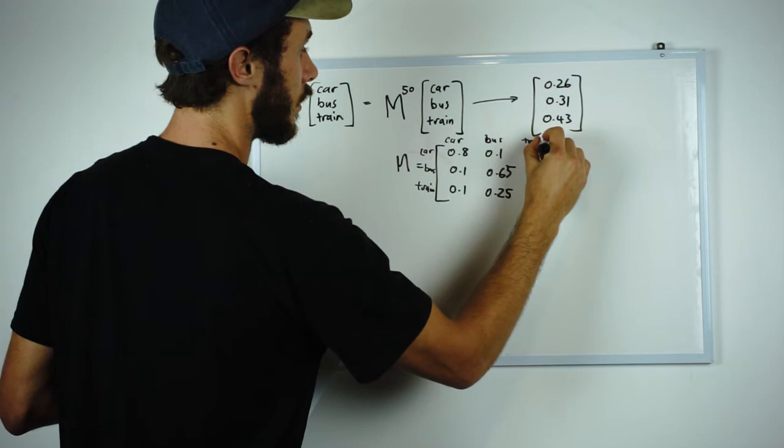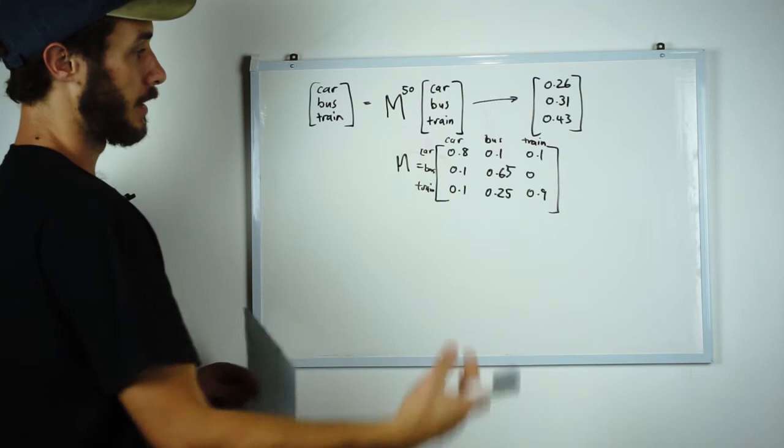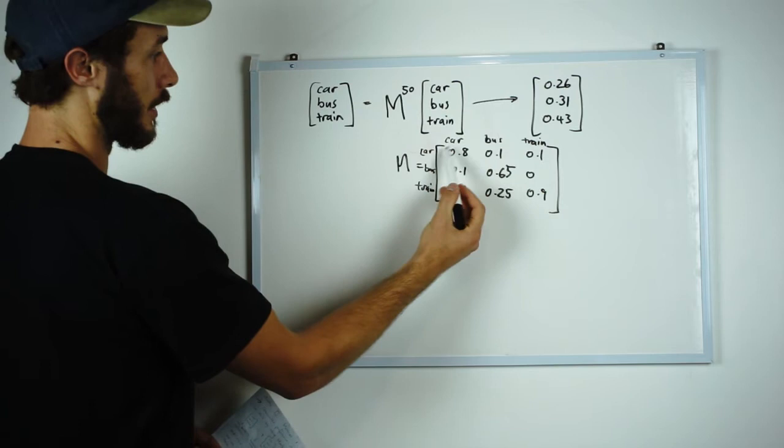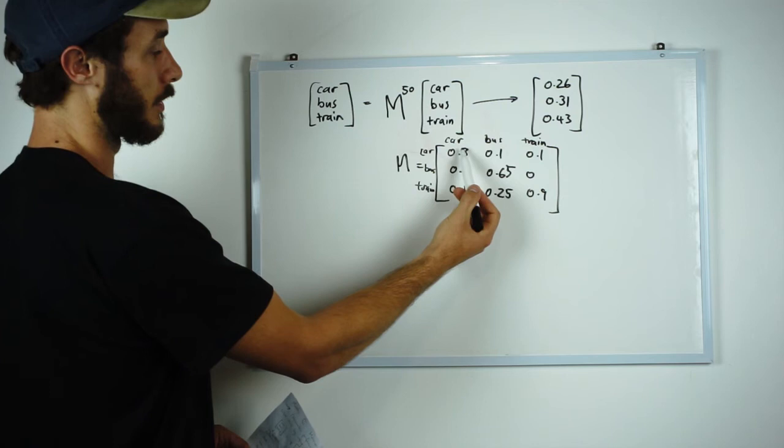To explain this a little bit more, it means basically how the conditions are changing or what modes of transport the passengers are moving to. So under here we have car and car. It means that 80% of the passengers who originally take the car continue to take the car as their mode of transport. It means that 10% of those original car passengers have moved to taking the train.